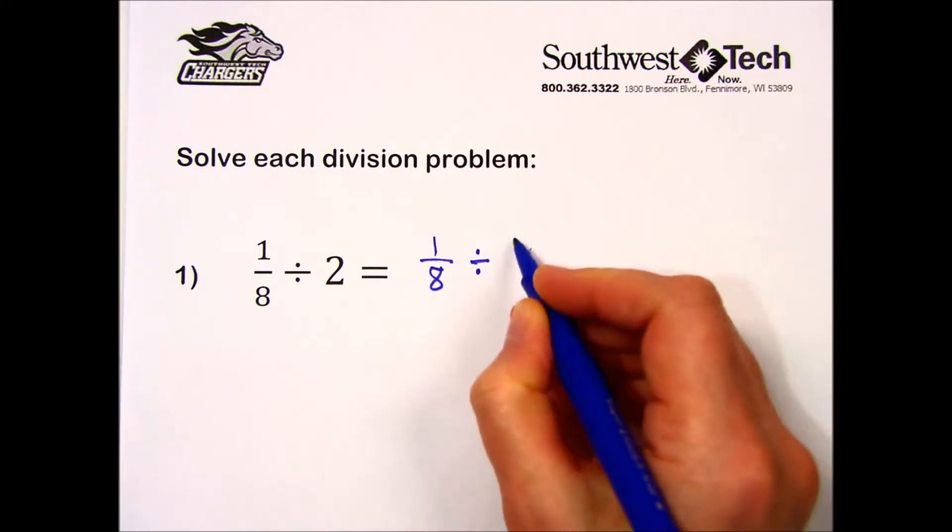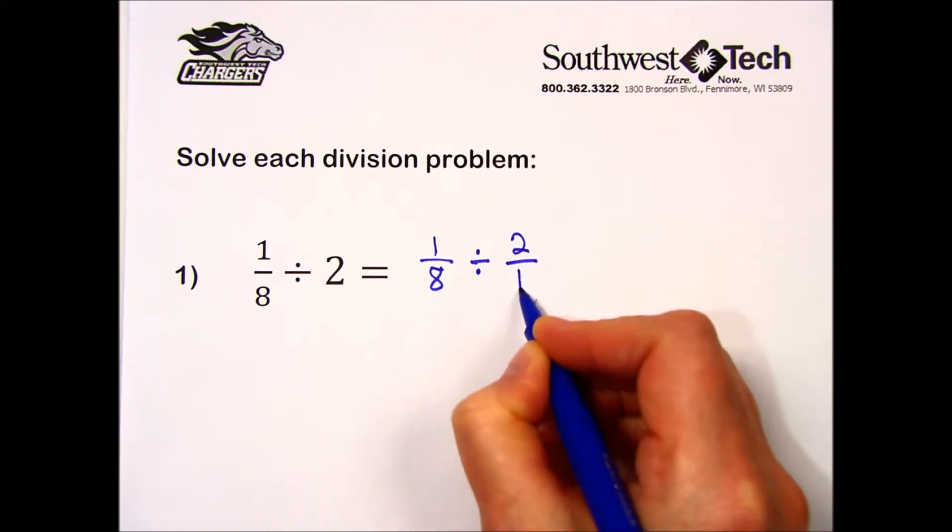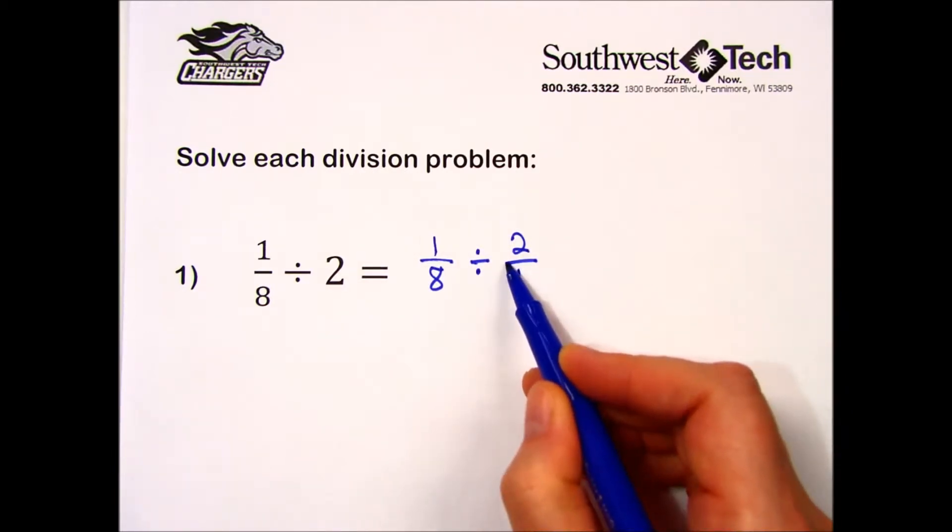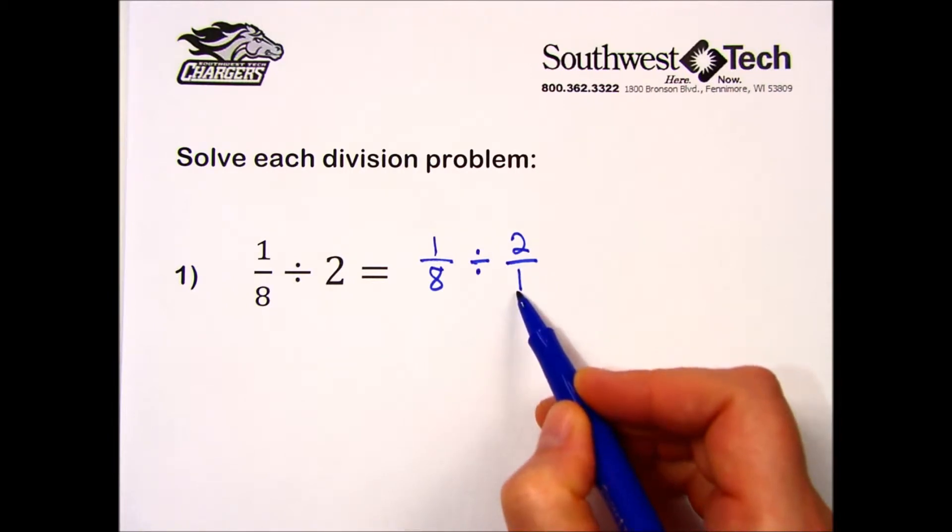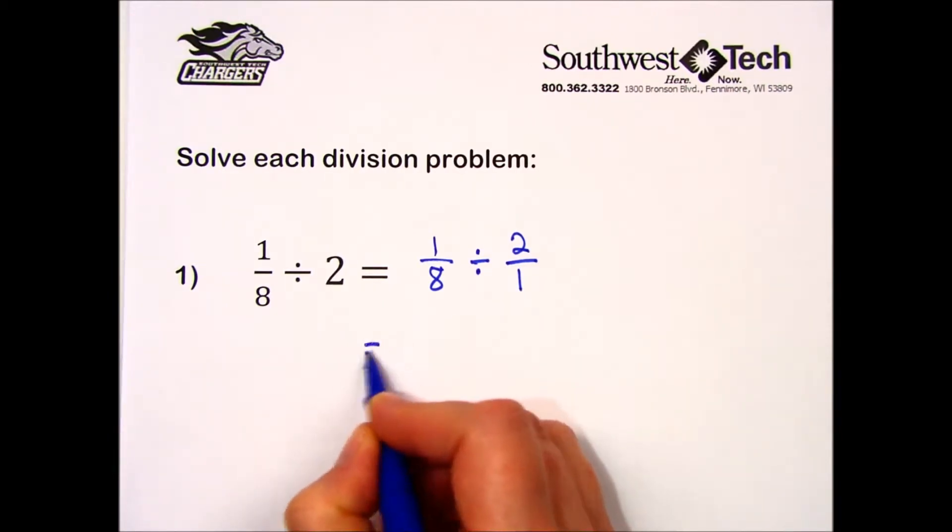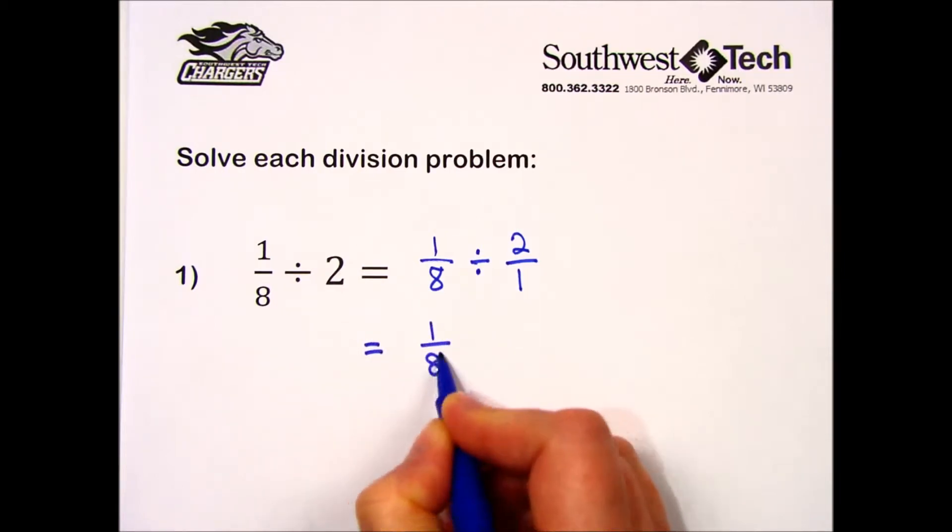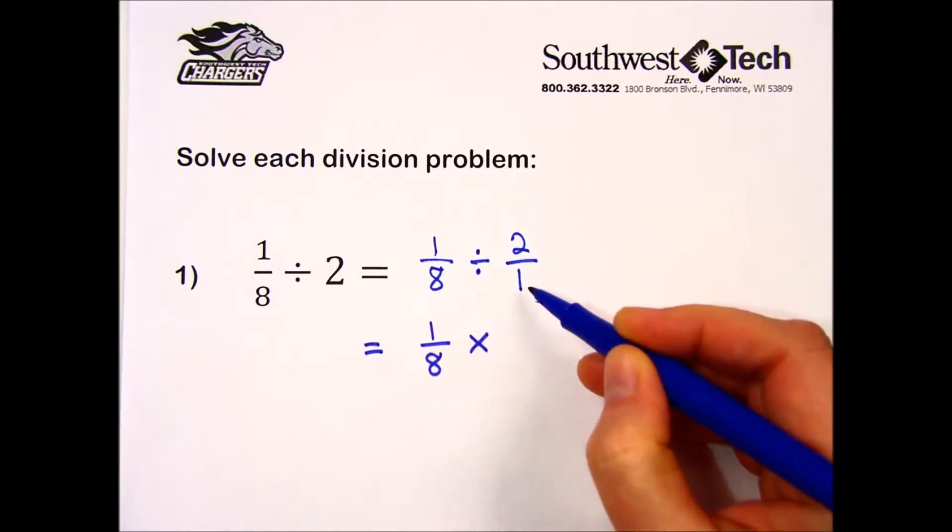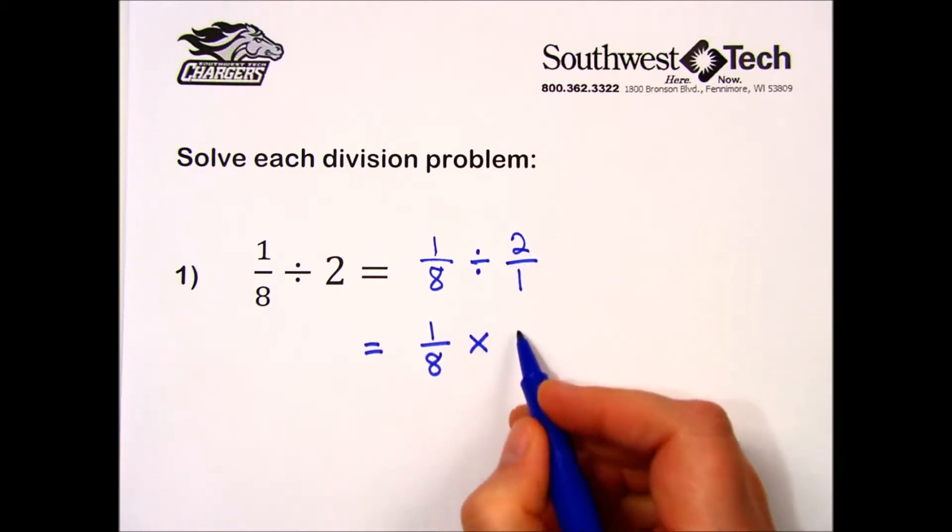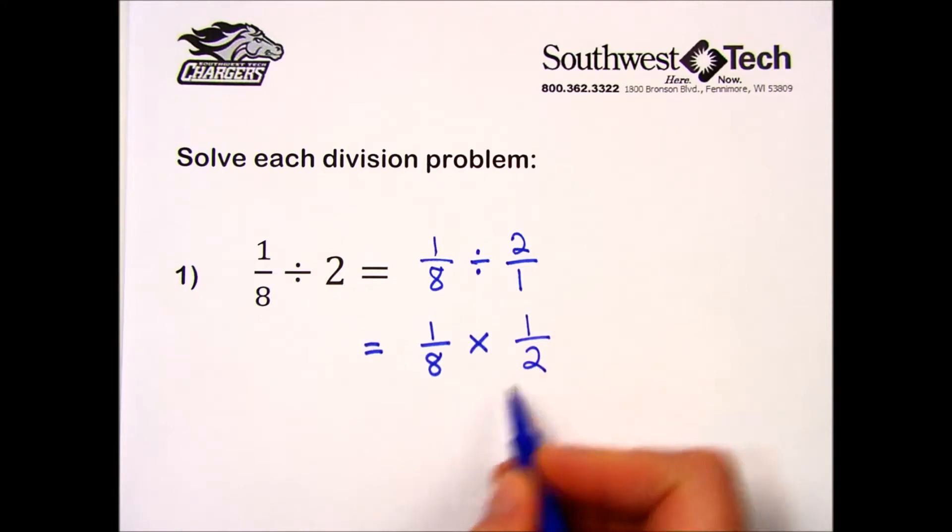A whole number 2 can be rewritten as 2 over 1, or 2/1. I can turn this into a multiplication problem by inverting the second fraction. 2 over 1 inverts to 1 over 2.